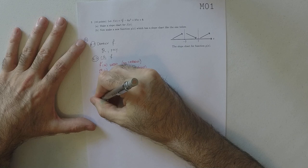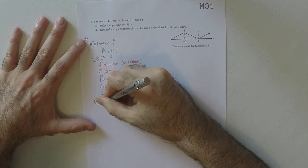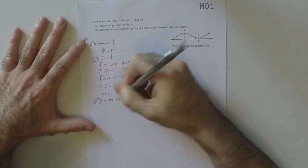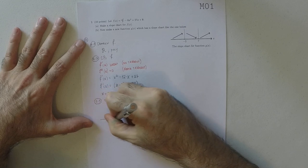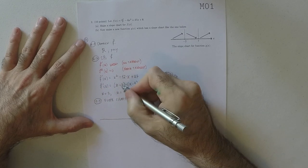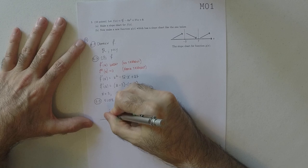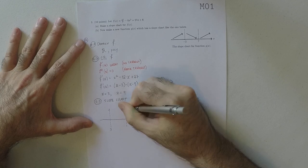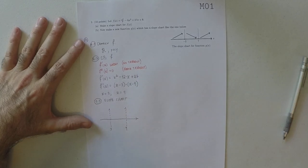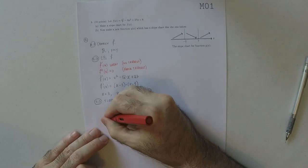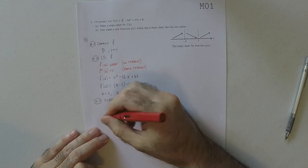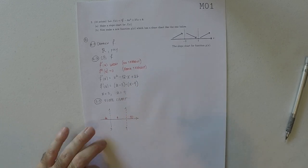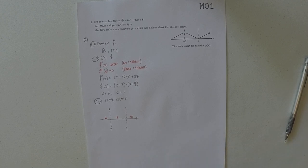Alright, so then step 3 is the construction of the slope chart. So then we have fences at 3 and 9. So now we'll select some sample points. So 2 is in there, 4 is in here, and 10 is in here.